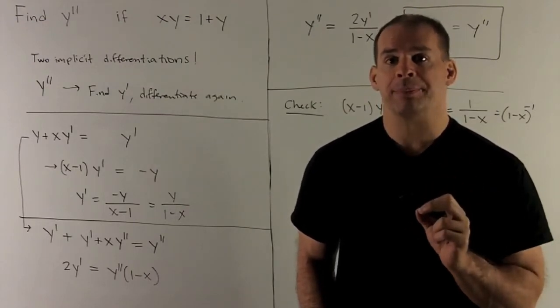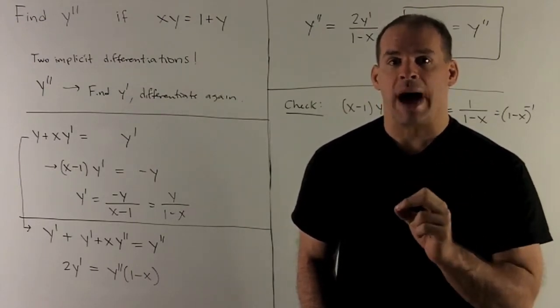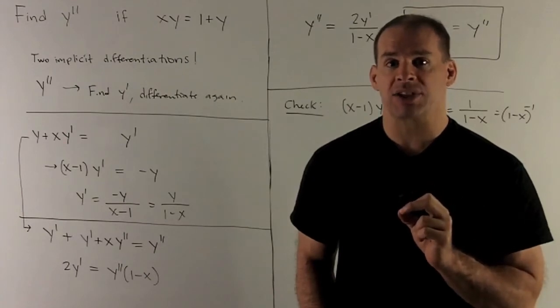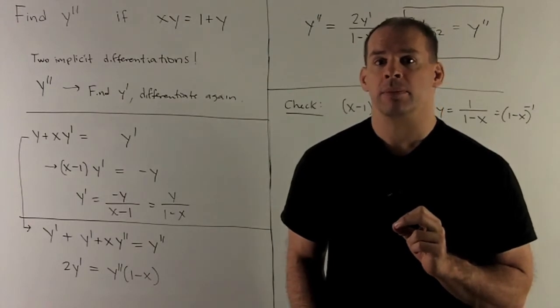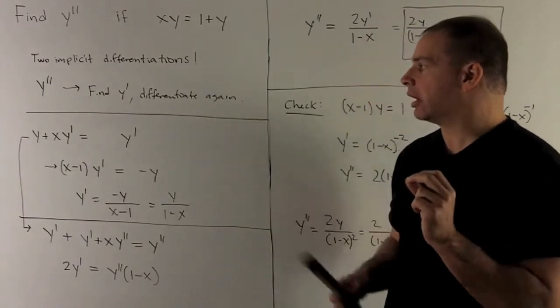On the other side, we have 1 plus y. I take its derivative with respect to x. The 1 goes away. And again, we have just y prime. So that's going to give me this equation here.